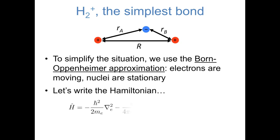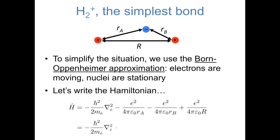We have a kinetic energy term for the electron, a potential energy term for the attraction of the electron and nucleus A, a potential energy term for the attraction of the electron and nucleus B, and a potential energy term for the repulsion of the two nuclei. In this expression, we find ourselves writing the same collection of constants, e squared over 4 pi epsilon 0, a large number of times. So we're actually going to rewrite this expression with that collection of constants shown as J0.